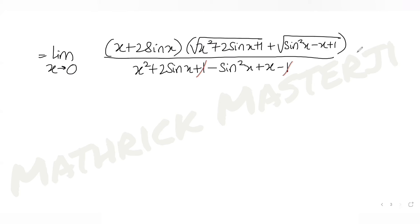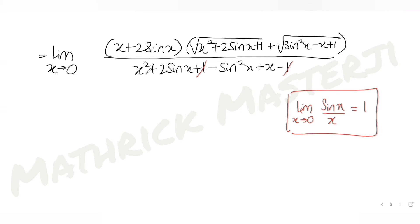Now I'll use the standard limit identity: limit as x tends to 0 of sin x over x equals 1. To apply this, I'll divide the entire expression — both numerator and denominator — by x. Dividing the first part of the numerator by x gives x over x, which is 1, plus 2 times sin x over x.